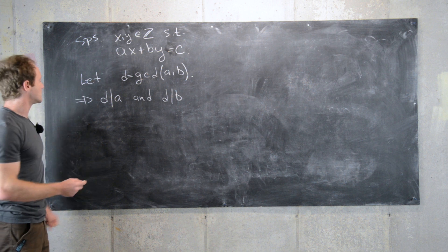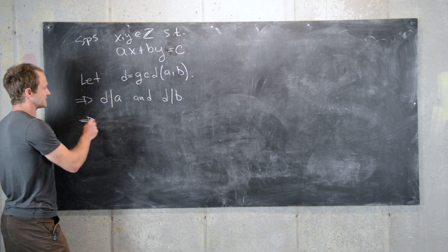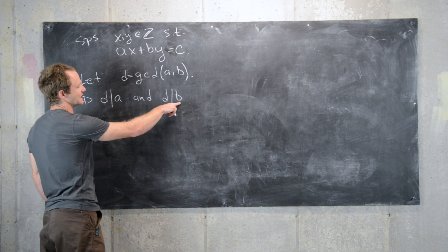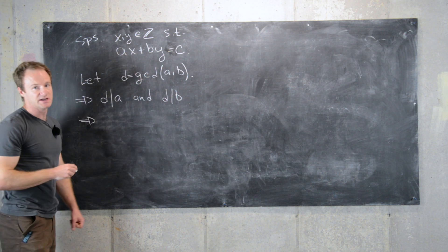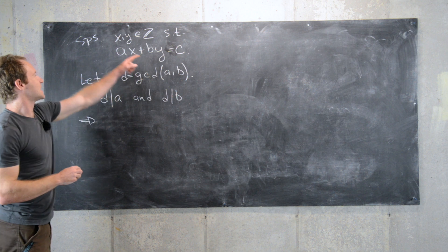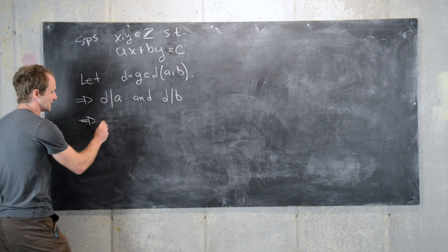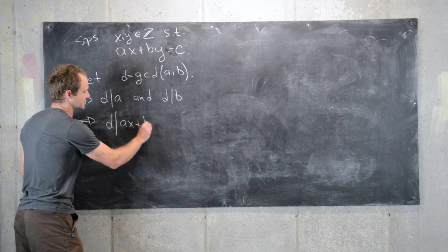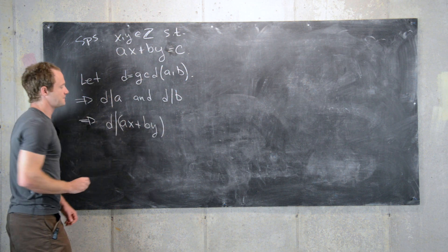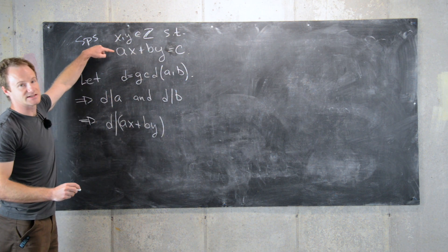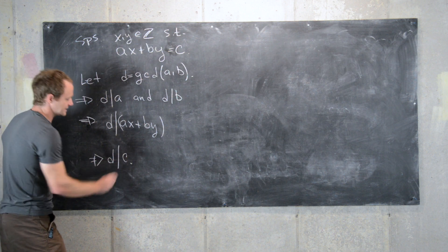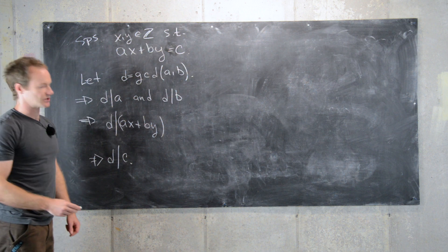Now that tells us that d divides any multiple of a and d divides any multiple of b, and thus it divides any combination of a and b like this, so that we have d divides ax plus by. But that means that d divides the left hand side of this equation, which tells us that d must also divide the right hand side of the equation.